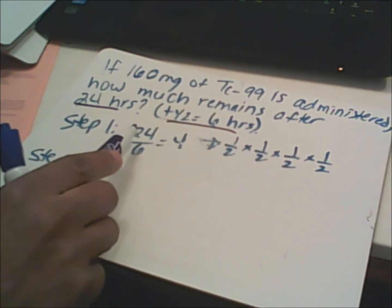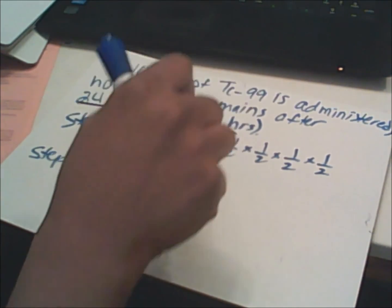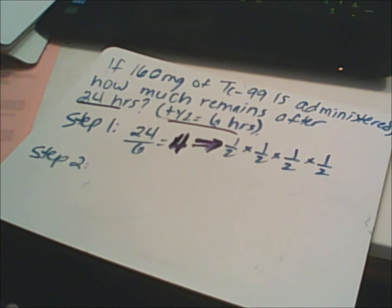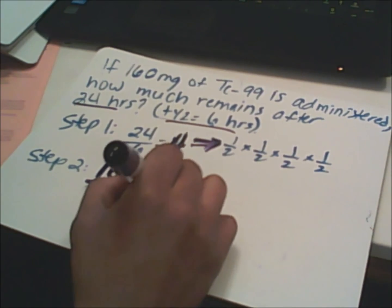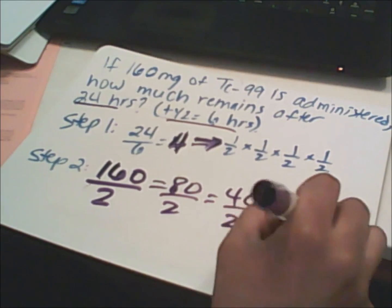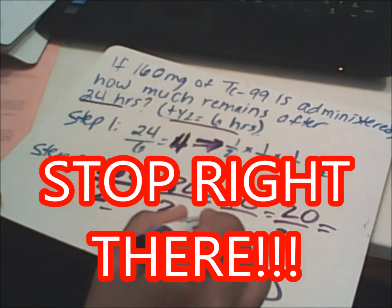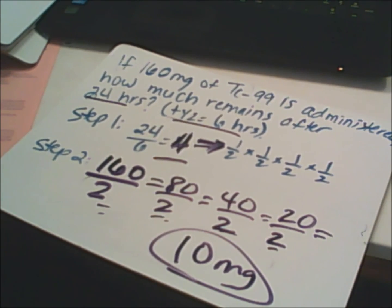Start with 24 divided by 6, which gives us 4 — indicating four half-life cycles: one-half times one-half times one-half times one-half. Now divide 160 by 2 to get 80, divide by 2 to get 40, divide by 2 to get 20, divide by 2 to get 10 milligrams. Count one, two, three, four — four divisions — and you get 10 milligrams. This concludes our discussion on half-life. If you have any questions, email me.